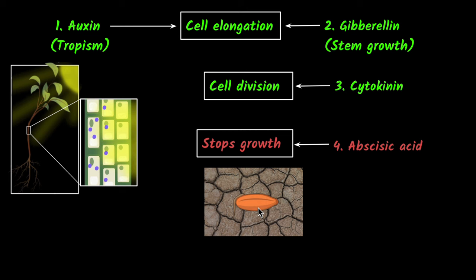But once it rains, that abscisic acid gets washed away, and now there'll be enough water. Because of that, it can start growing. So you see, it's super important sometimes to also stop the growth. These are some of the important growth and growth inhibitor hormones.